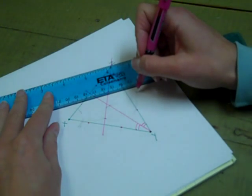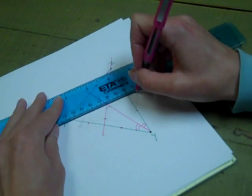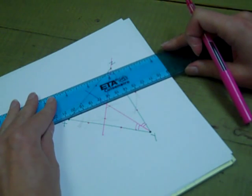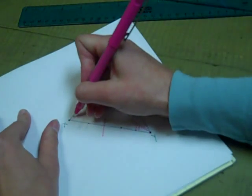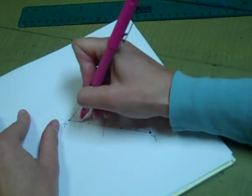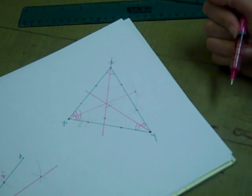I have an intersection point. When I line that up with X, it should bisect angle X.